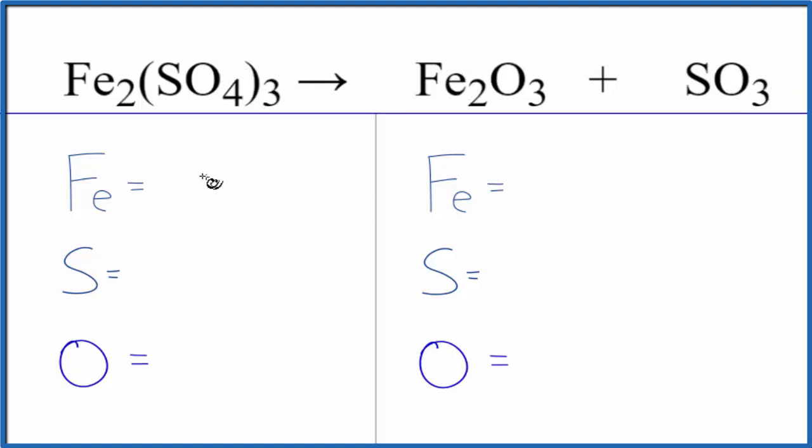Let's count the atoms up and balance the equation. We have two iron atoms. For sulfur, the 3 applies to everything in the parentheses, so we have 1 sulfur times 3, giving us 3 sulfur atoms. Then the 4 oxygens times 3 - 4 times 3 is 12 - gives us 12 oxygen atoms.